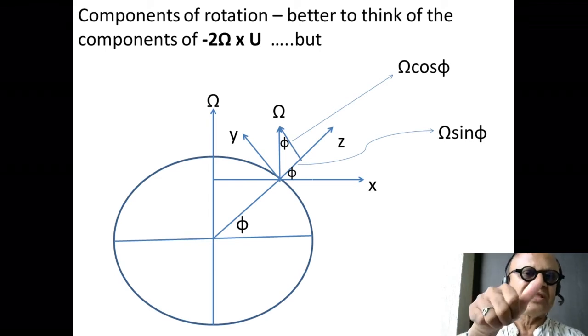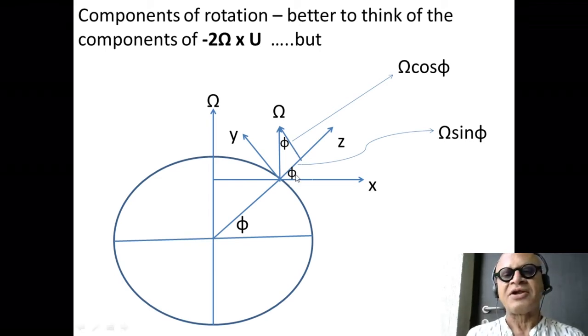So the latitudinal projection of Ω is Ω cos φ, where φ is this latitude. We will see quickly that this doesn't matter—the rotational effect in the latitudinal direction is not going to matter. You can think quickly how it is: the rotational effect is to the right of the direction of motion, it'll be in the vertical, so it'll be in the local z direction, and local gravitational direction, so it's going to be very small compared to g as we will see.